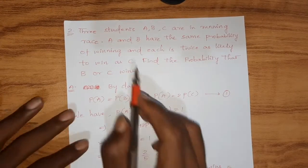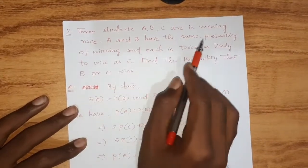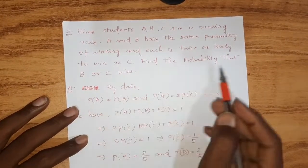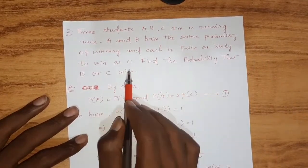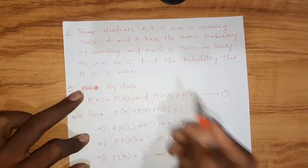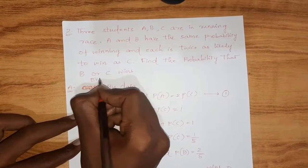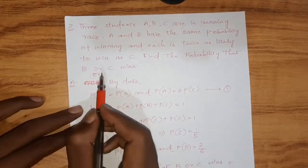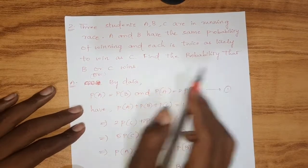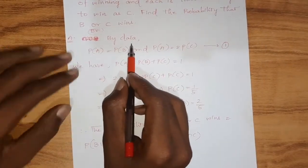The second problem: three students A, B, C are in a running race. A and B have the same probability of winning, and each is twice as likely to win as C. We need to find the probability that B or C wins. Since the question says 'B or C wins', we recognize this as an addition theorem problem and need to find P(B ∪ C).